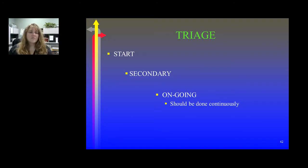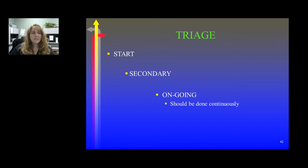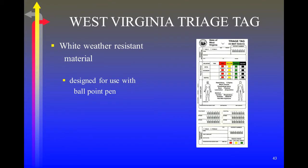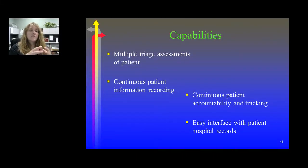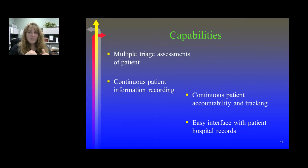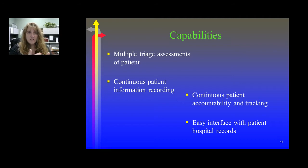You're doing your START triage, your secondary triage, and then ongoing — this should be done continuously, maintaining contact with patients. The West Virginia triage tag is white, weather-resistant material, meant to be used with a ballpoint pen. It allows you to reassess the patient multiple times, keeping a continuous patient information record and accountability and tracking system. It interfaces easily with the hospital through peel-and-stick labels with bar coding.